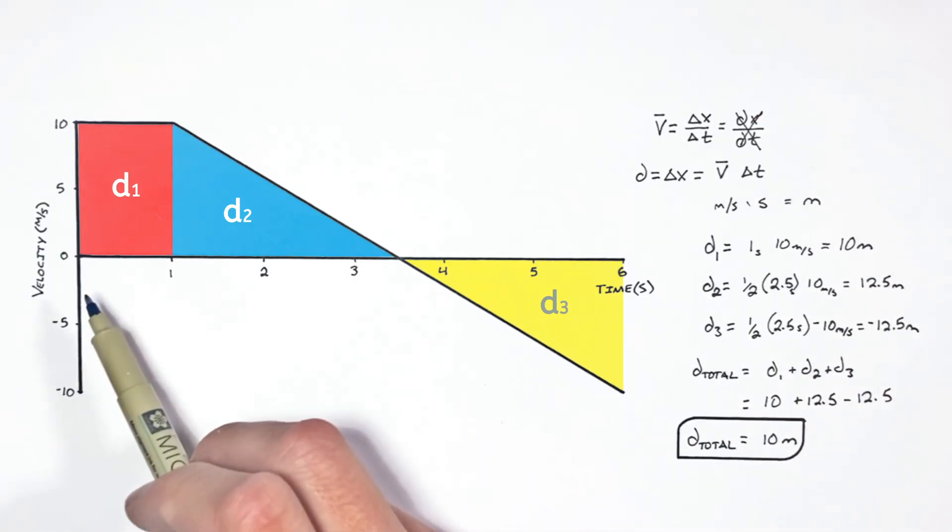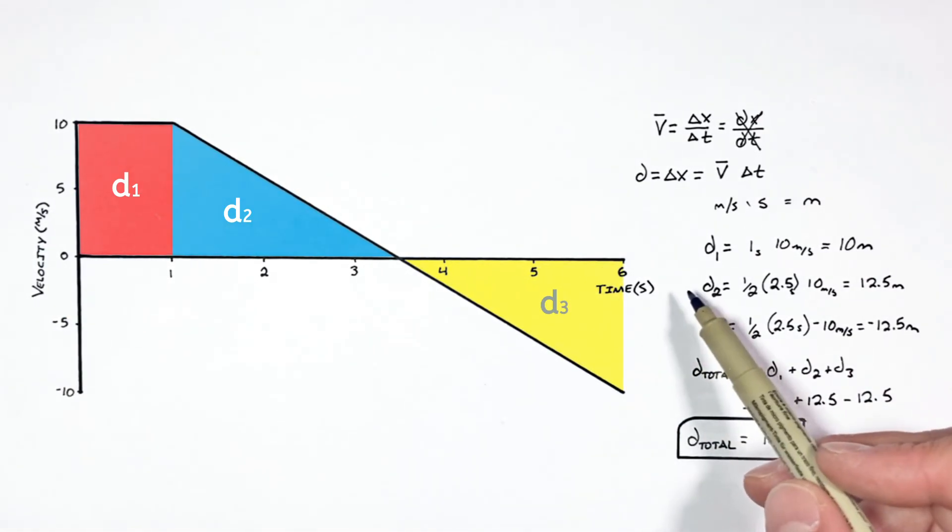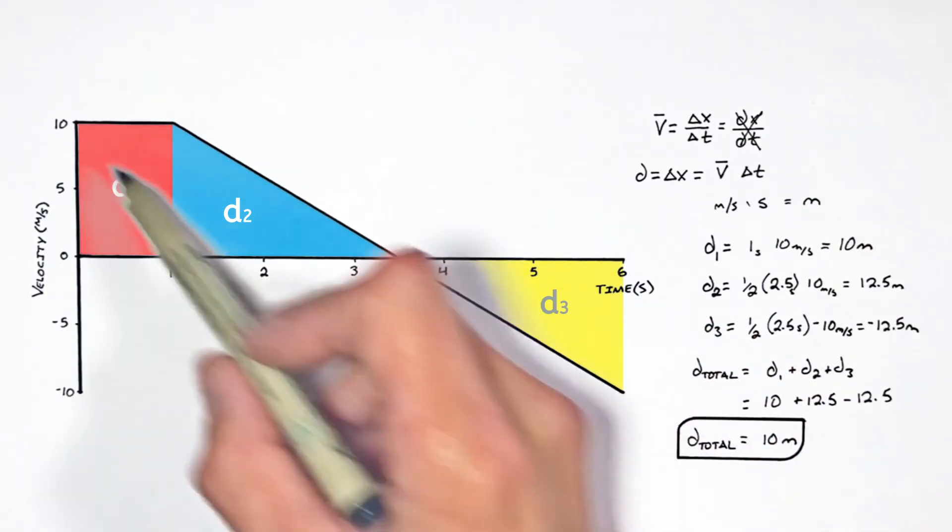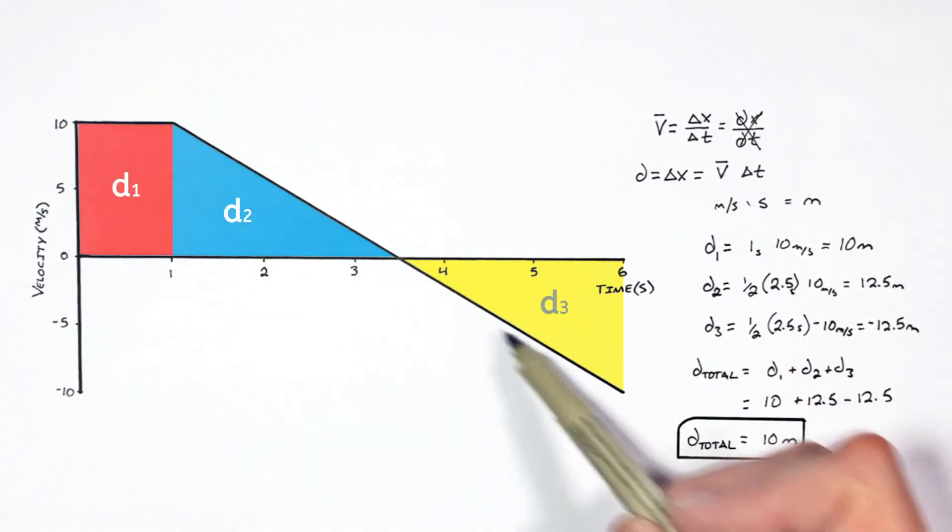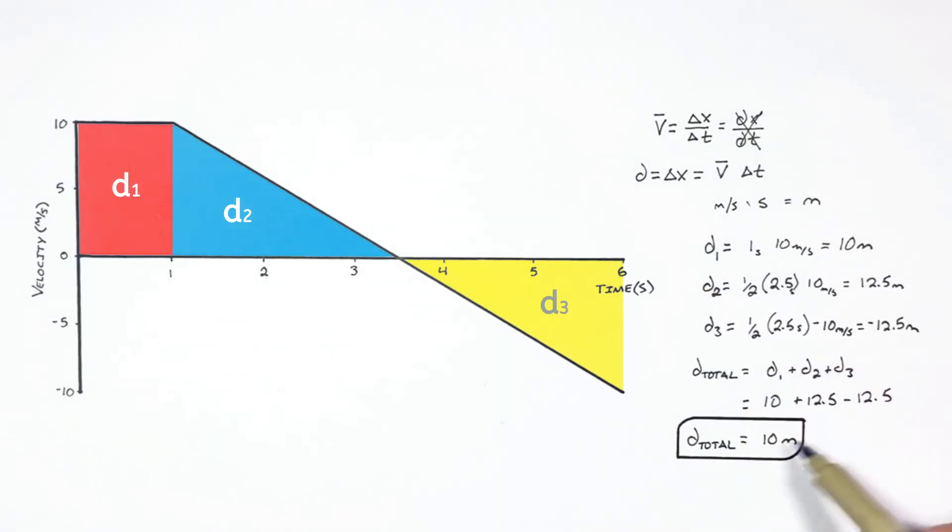So next time you're trying to solve for the displacement of an object, given just the velocity versus time graph, remember all you need to do is solve for the area between the motion curve and the x-axis, and that will yield your total displacement. So I hope you found this useful, and on that note, that's all for now.